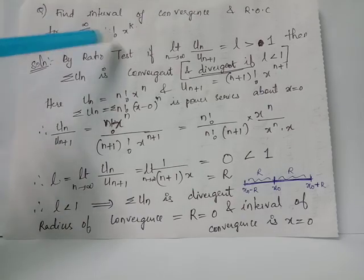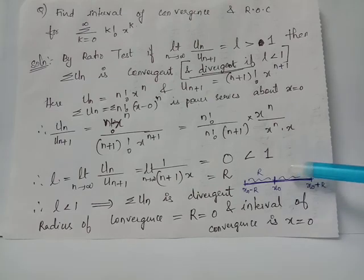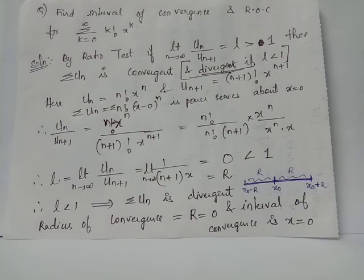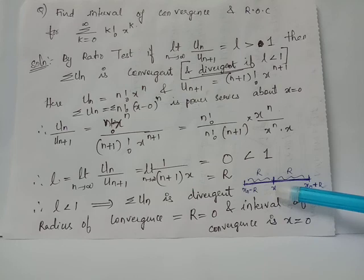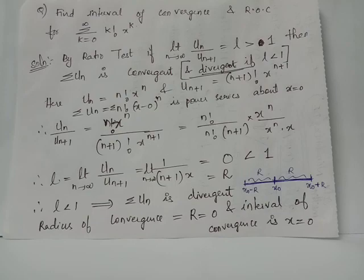For the power series summation k from 0 to infinity of k factorial times x raised to k, we identified that R equals 0. This is a power series about x equals 0, so the interval of convergence is centered at x equals 0. With R equals 0 and x_0 equals 0, the interval of convergence confines itself to just the single point x equals 0, which can be written as the interval [0, 0] containing only the singleton element 0. Therefore R equals 0 means the distance from the center to the endpoints equals 0.